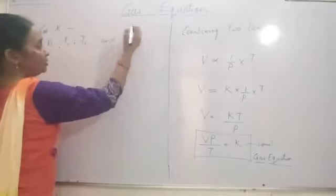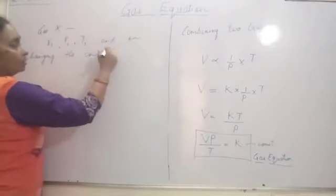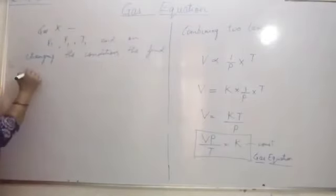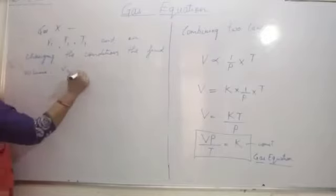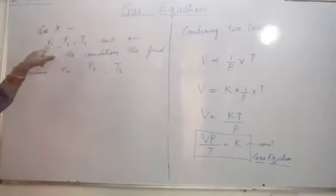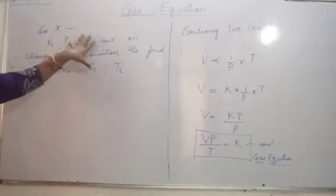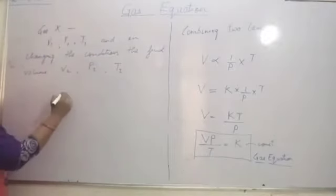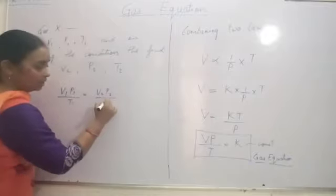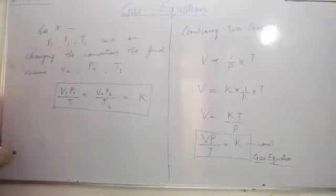On changing the conditions, if the initial state has volume V1, pressure P1, and temperature T1, and the final state has volume V2, pressure P2, and temperature T2, then we can write V1 × P1 / T1 = V2 × P2 / T2 = constant K. This equation will be used in the numerical problems we are going to do further.